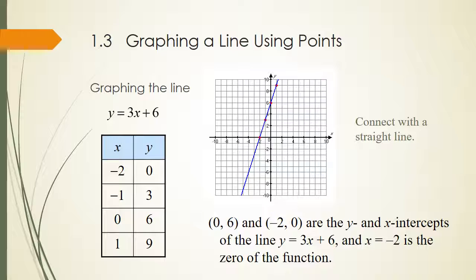Notice that (0, 6) and (-2, 0) are the x and y intercepts of the line, and x equals negative 2 is called the zero of the function.